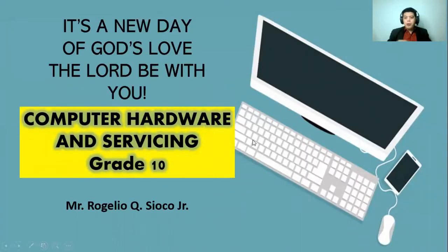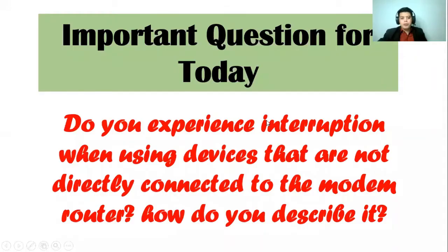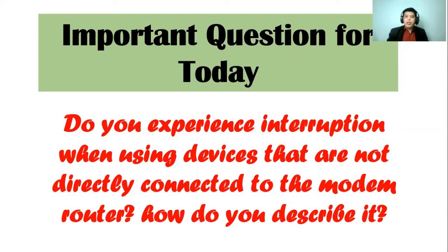So for today, class, let me share my presentation. We're going to study about our new lesson on cabling. Before we go on our activity, I have an important question for you. Do you experience interruption when you are using devices that are not directly connected to the modem or router? Sometimes we experience this situation wherein we are connected to the Wi-Fi, but the Wi-Fi is too slow. Remember, there are two types of connection: wireless connection and wired connection. Later on, we're going to discuss the difference between the two and how to get a faster connection.